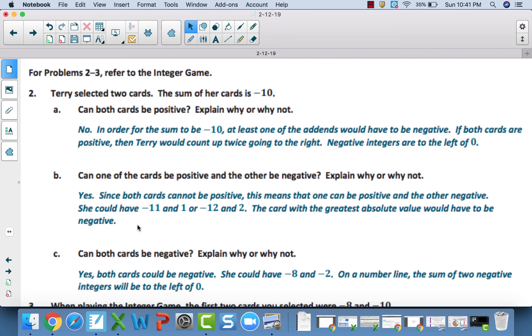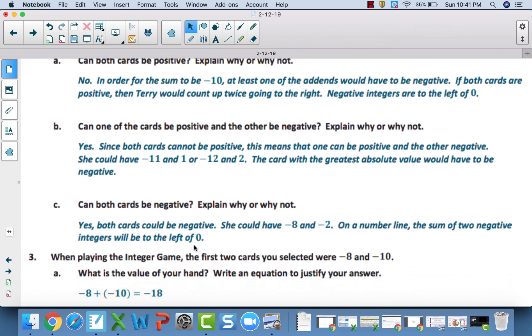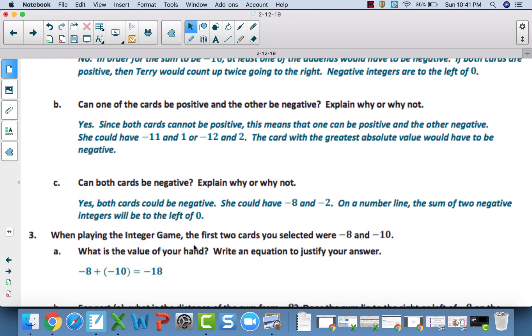Now, B can be true. Both cards cannot be positive, but one can be positive and one can be negative. She could have maybe negative 11 and 1, negative 12 and 2. That's fine as long as the card with the greatest absolute value is negative. Can both be negative? Yes, of course. You could have negative 8 and negative 2, negative 5 and negative 5, negative 4 and negative 6. C is for sure true.